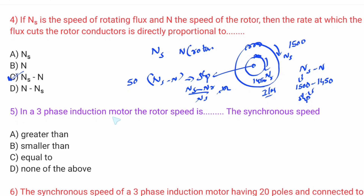The next question: in a three-phase induction motor, the rotor speed is blank compared to synchronous speed. Rotor speed Nr is less than Ns. So Nr is less than Ns — the rotor speed is always smaller than the synchronous speed in a three-phase induction motor. This is very important.